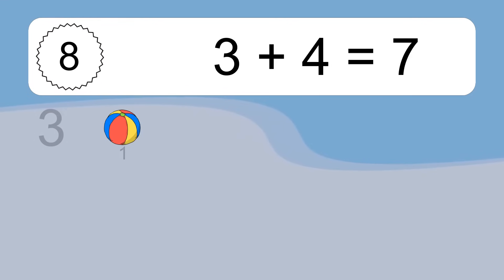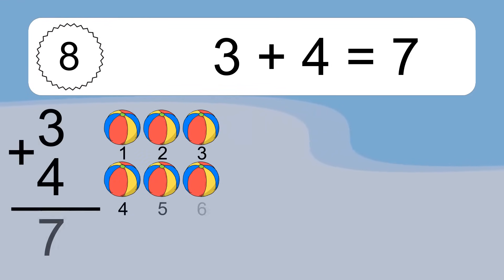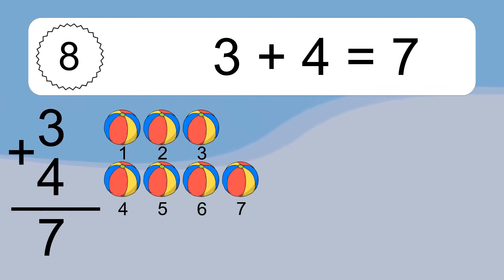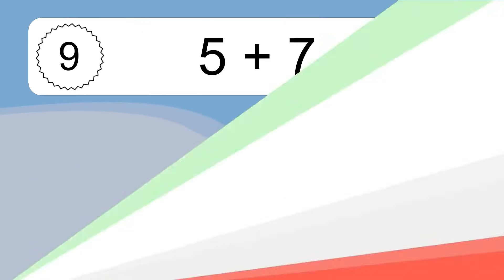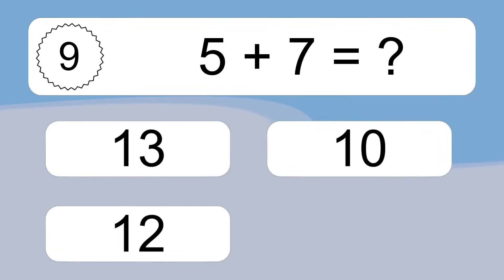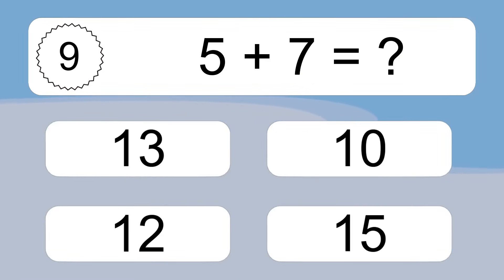3 plus 4 equals 7. Let's count it. 1, 2, 3, 4, 5, 6, 7. 5 plus 7 equals what?